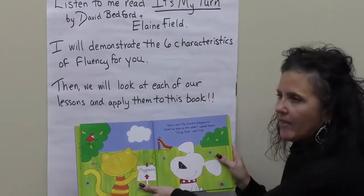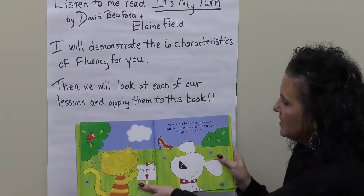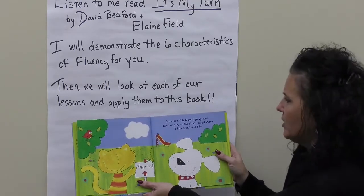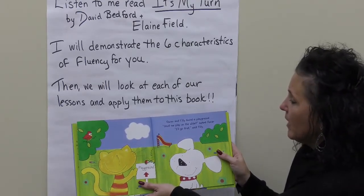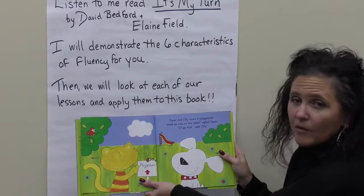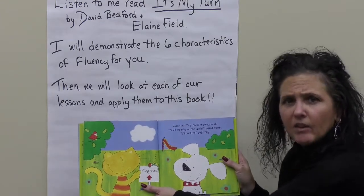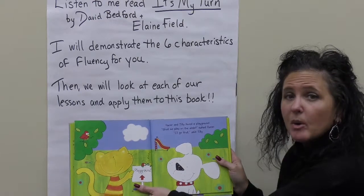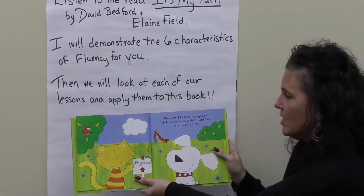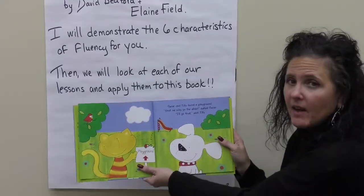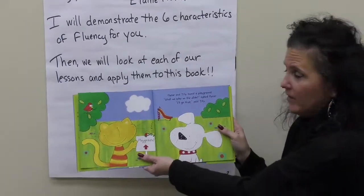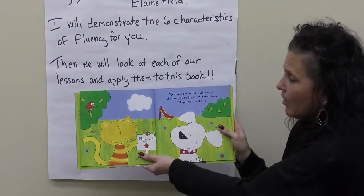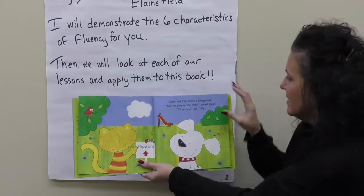If we were looking at the first lesson of fluency and we read this like there was no punctuation, we would say: Oscar and Tilly found a playground. Shall we play on the slide? Ask Oscar. I'll go first, said Tilly. Now, that's not how you're supposed to read. You're supposed to follow the punctuation. So we would say: Oscar and Tilly found a playground. Shall we play on the slide? Asked Oscar. I'll go first, said Tilly. See, that sounds much better.